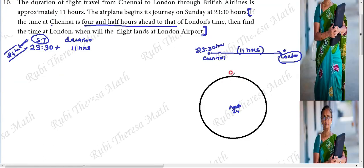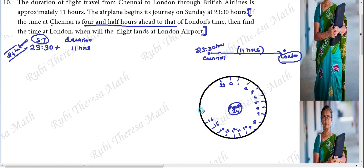Mod 24 starts from 0 and ends at 23 — one less than the divisor that you choose. So we count: 1, 2, 3, 4, 5, 6, 7, 8, 9, 10, 11, 12, 13, 14, 15, 16, 17, 18, 19, 20, 21, 22, 23 — and then we go back to 0. Starting from 23:30, which is night time in 12-hour format.